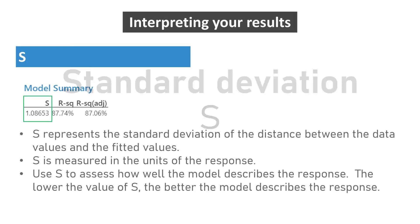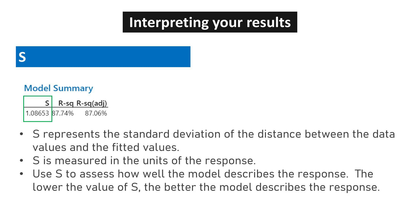The Standard Deviation S represents the standard deviation of the distance between the data values and the fitted values. S is measured in the units of the response. Use S to assess how well the model describes the response. The lower the standard deviation S, the better the model fits the data, suggesting a stronger linear relationship between the variables.